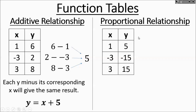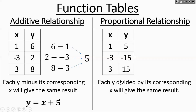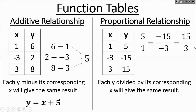So essentially we're adding 5 to every x value to get our y value. The rule in equation form would be y equals x plus 5 for this table. Over here for proportions, instead of subtracting y and x, you divide each y by its corresponding x, and they should all work out to the same thing: 5 divided by 1, negative 15 over 3, 15 over 3 — they all divide out to 5. So you're not adding 5; you're multiplying each input by 5. The equation is y equals 5 times x.